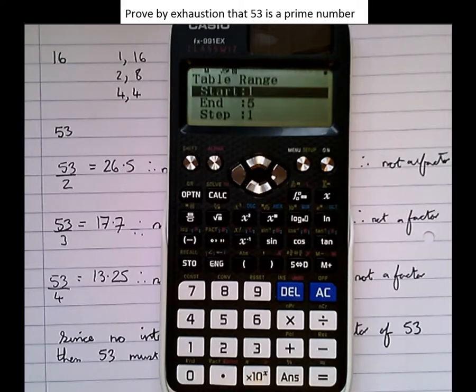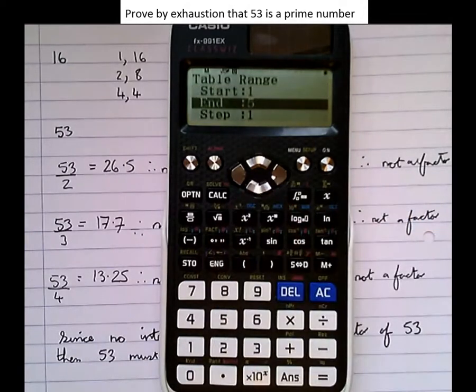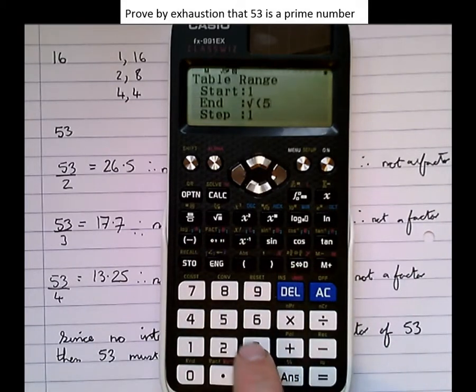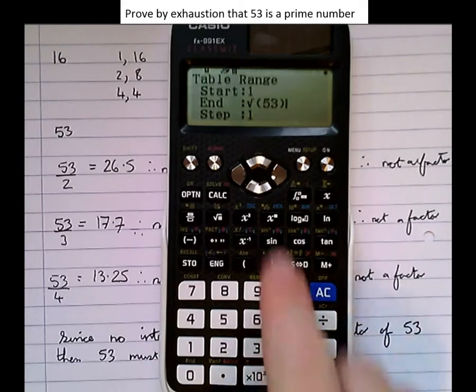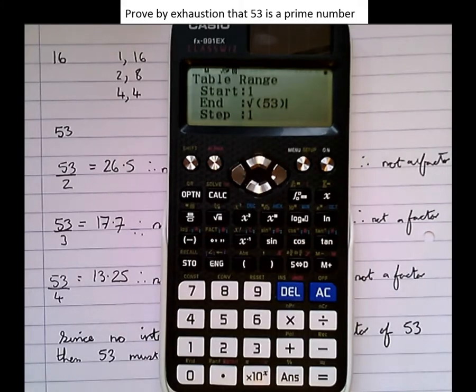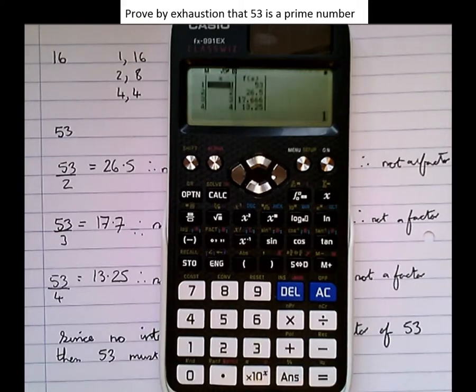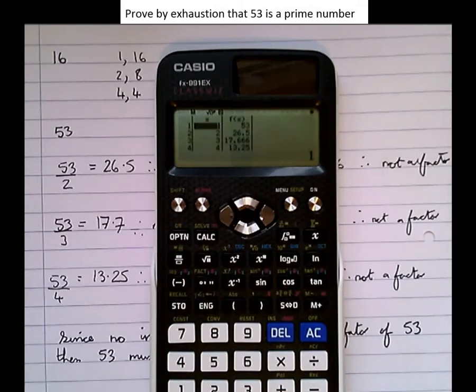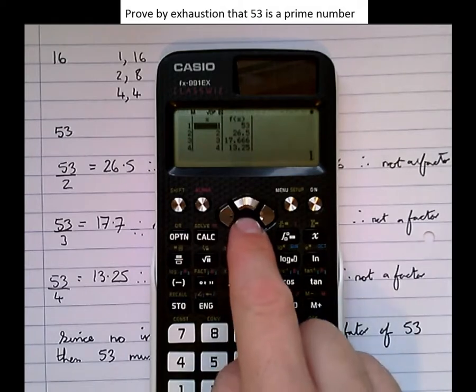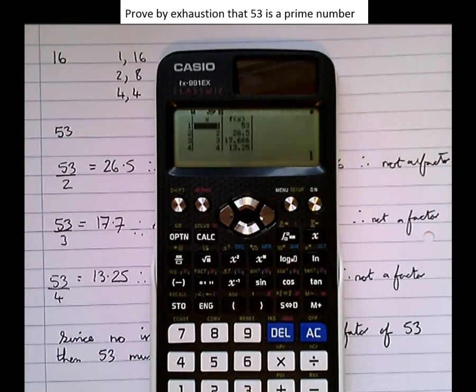For the table range, we want to start at 1 and end at the root of 53, which takes us up to the integer nearest to root 53, which is 7. The step is what number we want to go up in, so we set it to 1. Now we can see all the work's been done for us: when X equals 1, f(X) equals 53; when X equals 2, 26.5. All the answers match what we calculated longhand earlier, so that makes things a lot easier.